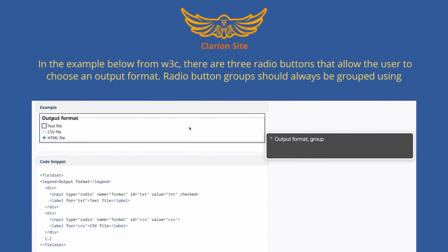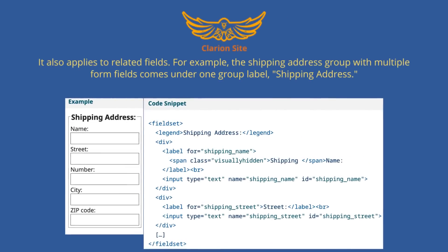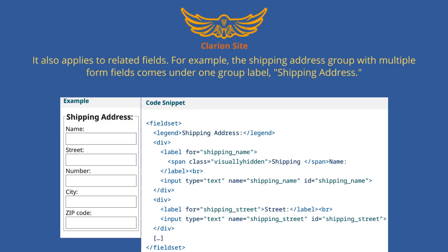In the example from W3C, there are three radio buttons that allow the user to choose an output format. Radio button groups should always be grouped using fieldset. This also applies to related fields — for example, the shipping address group with multiple form fields comes under one group label: 'shipping address.'